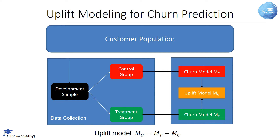In other words, the uplift model estimates the uplift by subtracting the churn probability when not treated, estimated by the control churn model, from the churn probability when treated, estimated by the treatment churn model. This approach is indirect, in the sense that uplift is not directly estimated by a model fitted to produce uplift scores. Instead, uplift is calculated indirectly from both estimated churn probabilities. It has the benefit of being straightforward to implement.